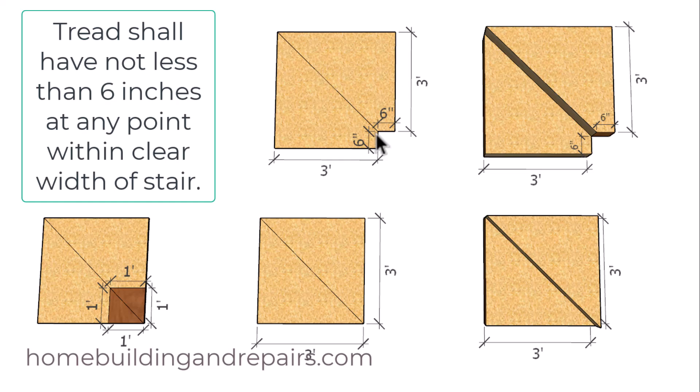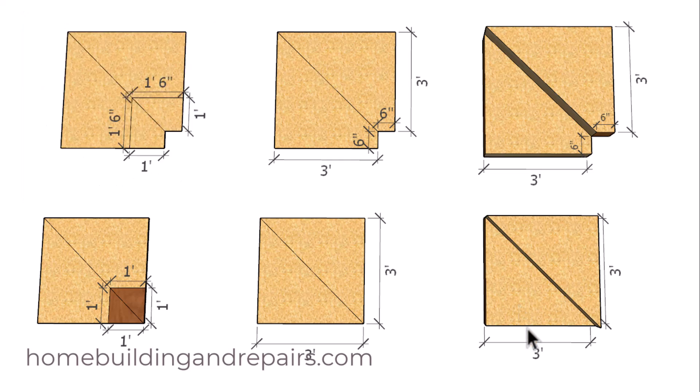So that six inches can be located anywhere, but more than likely it's going to be located here, suggesting that this one here won't meet that building code requirement. However, I need to point out that this might not be a requirement in your area, and this type of winder setup would be acceptable.